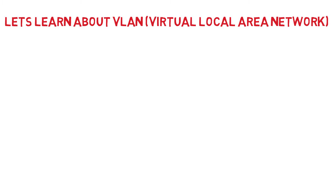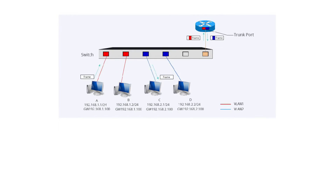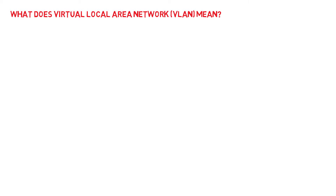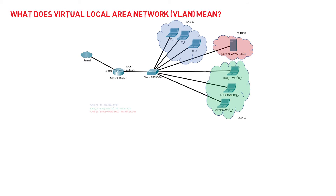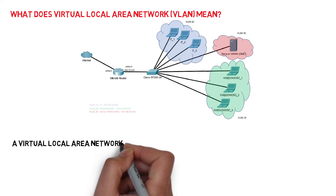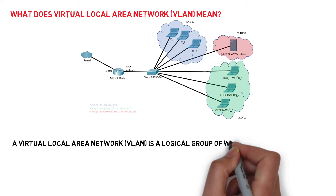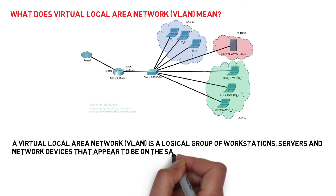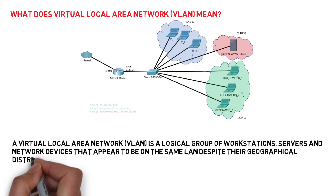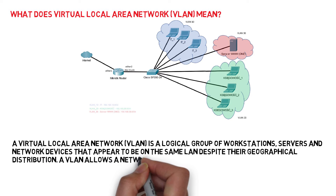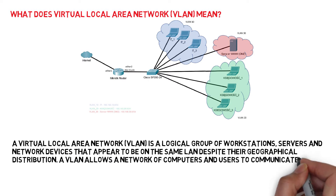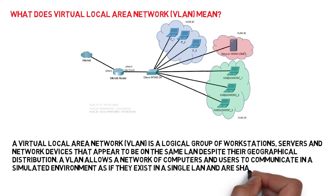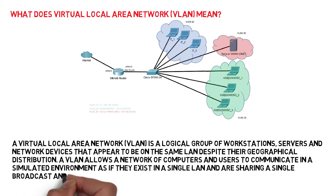Today let's learn about VLAN — Virtual Local Area Network. A Virtual Local Area Network is a logical group of workstations, servers, and network devices that appear to be on the same LAN, despite their geographical distribution. A VLAN allows a network of computers and users to communicate in a simulated environment, as if they exist in a single LAN, and are sharing a single broadcast and multicast domain.